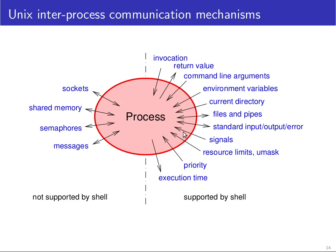You can send a signal to a process — that's a little flag set in the process's descriptor table which either does something to the process like aborting or suspending it, or tells the process that a certain action is expected. Some signals can be intercepted by the process; for example, if a process doesn't intercept an interrupt signal it gets aborted, but it can also react to the interrupt signal to shut down gracefully and release allocated resources.